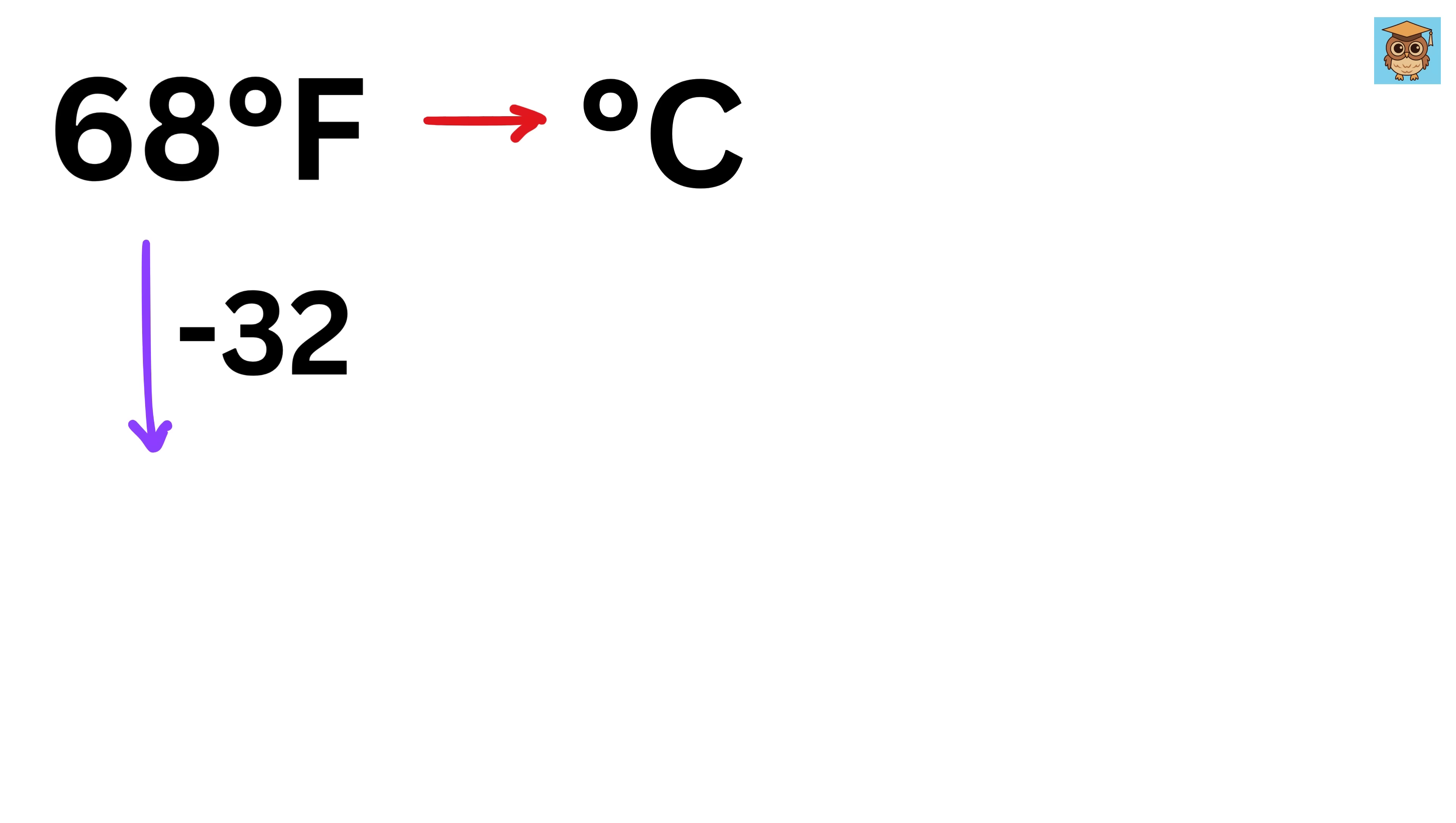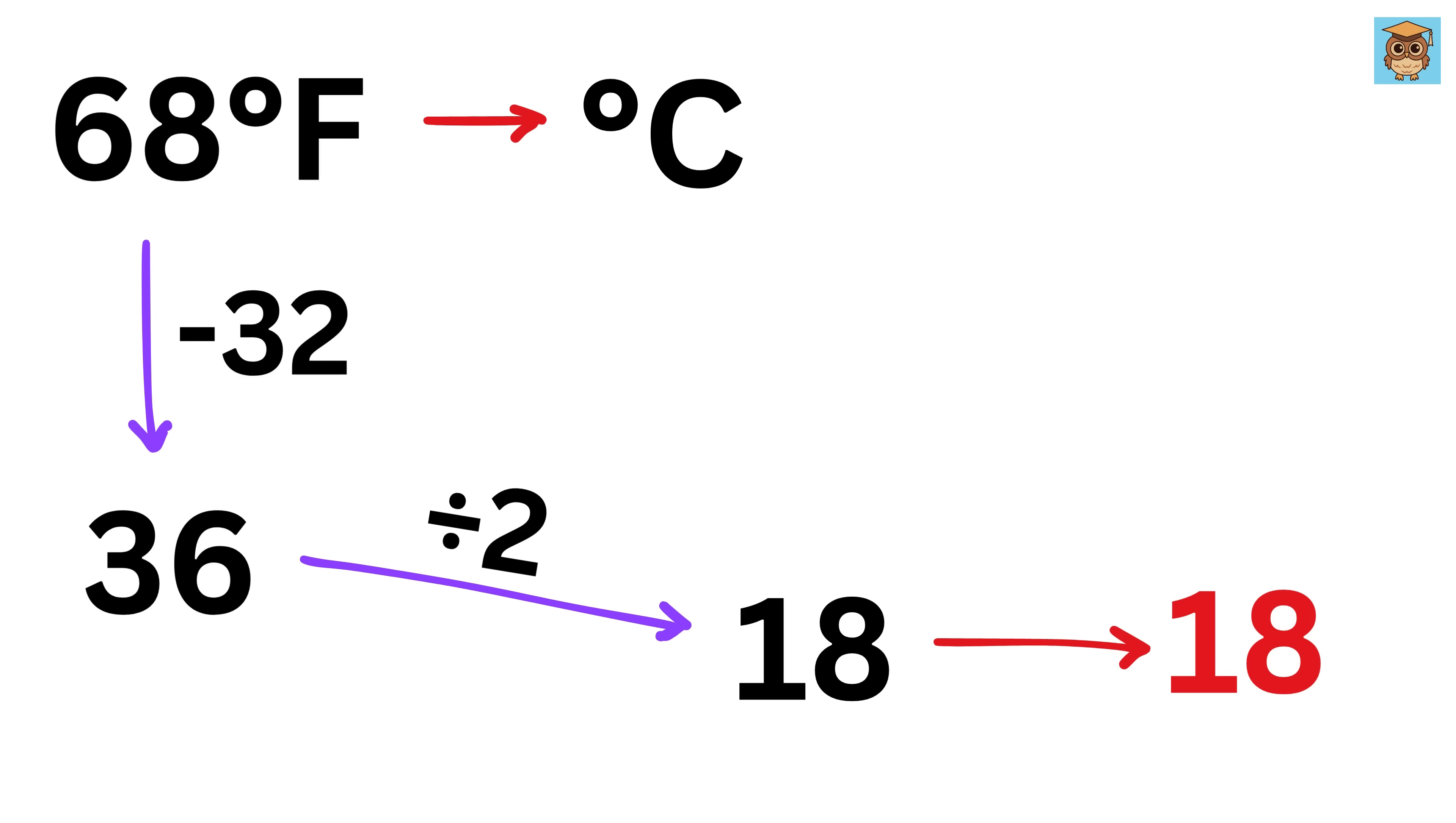First we will subtract 32 from this value, we get 36. Now divide it by 2 to get 18. First write 18 as it is this side, and here divide this 18 by 10 to write 1.8 here.